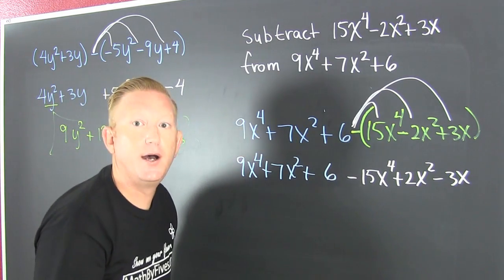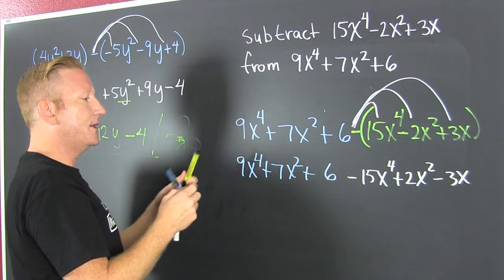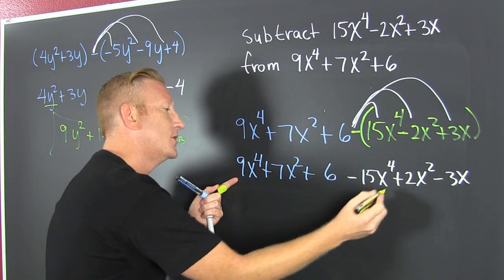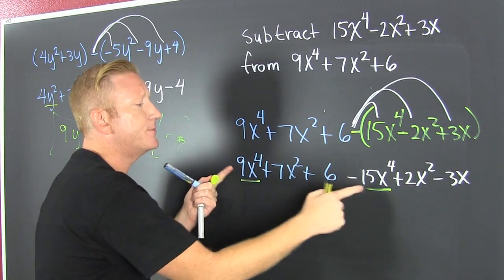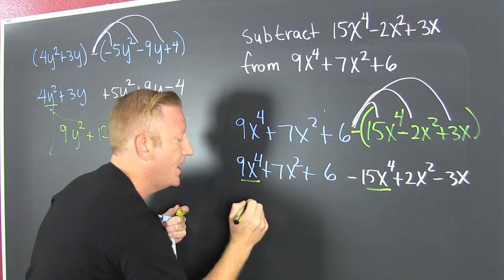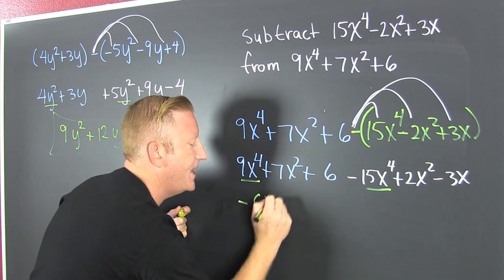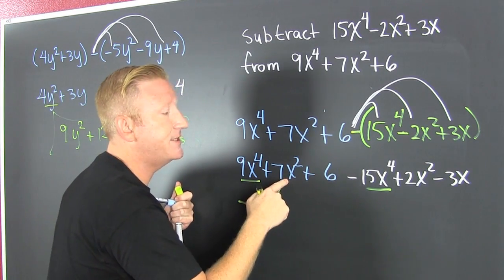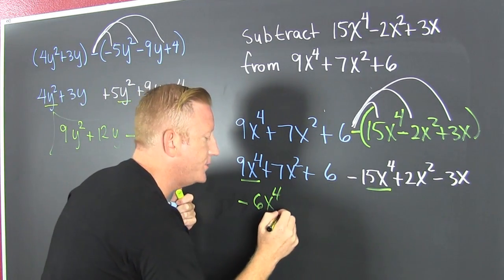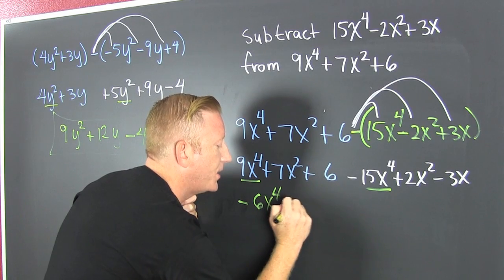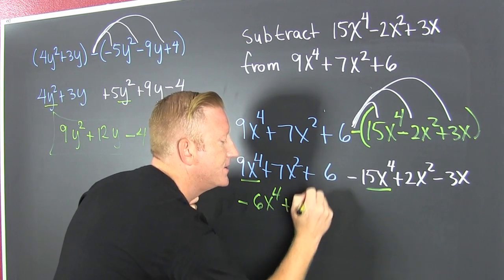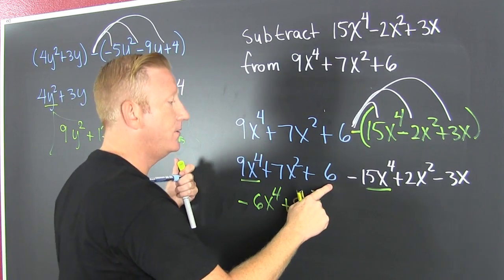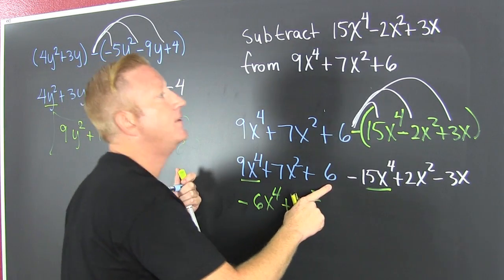Now we gather, collect, and combine. We find the x⁴ like terms, so we subtract their coefficients and I have minus 6x⁴. And then plus 7x² plus 2x² that's plus 9x².